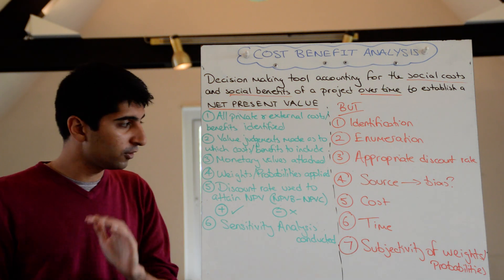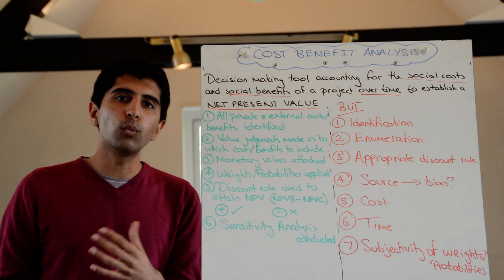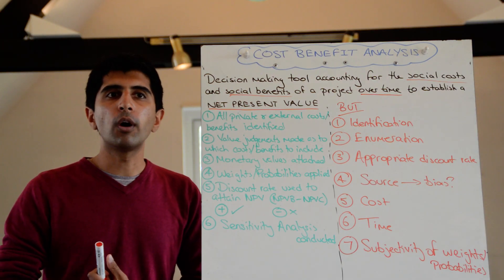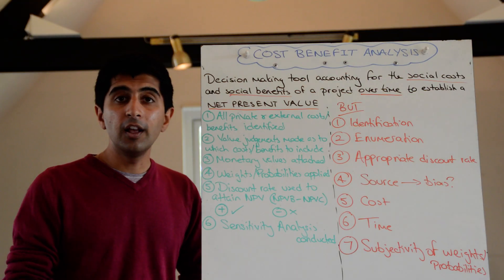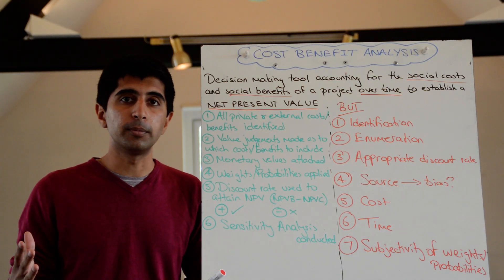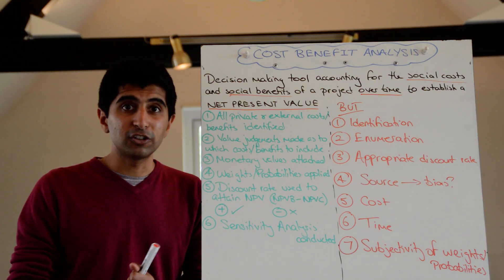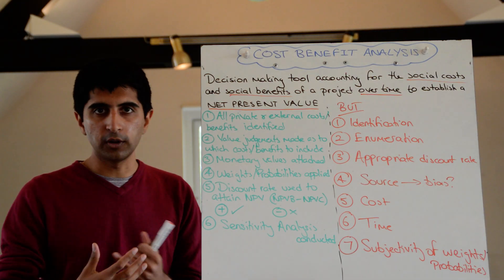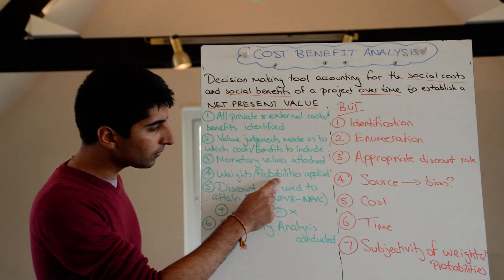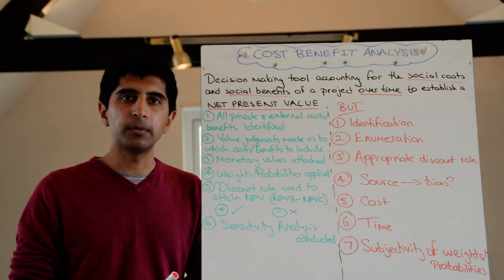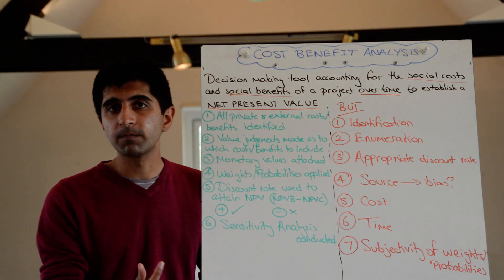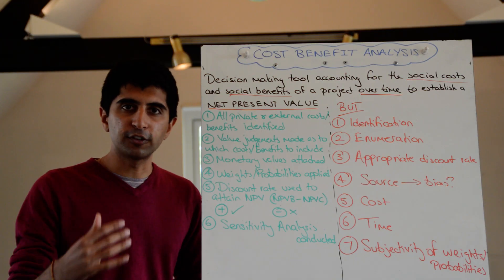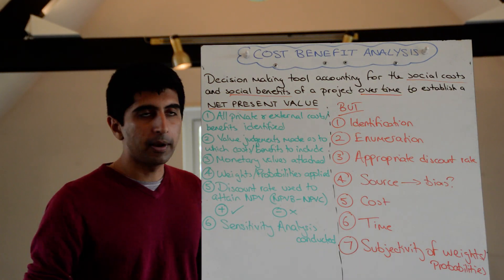Next, these costs and benefits are weighted according to severity. Say in the construction of a new runway or Crossrail you expect there to be some loss of life — it's probably the worst cost imaginable, so that should be weighted very highly. But probabilities are also applied. The probability of that happening might be very low, so even though it's weighted significantly, the low probability means it won't skew the final figure. So weightings and probabilities are applied.